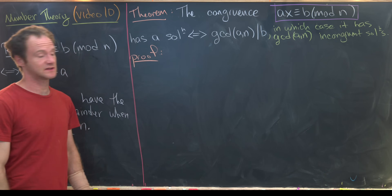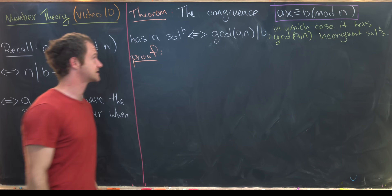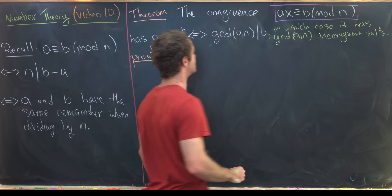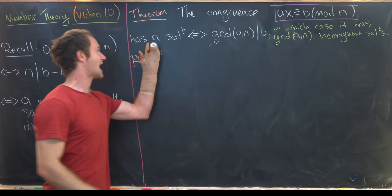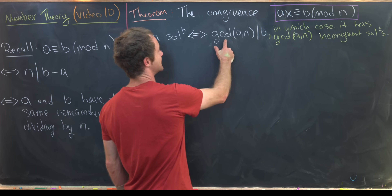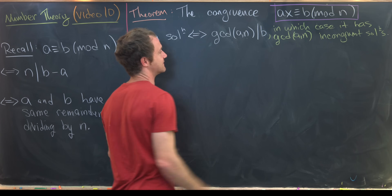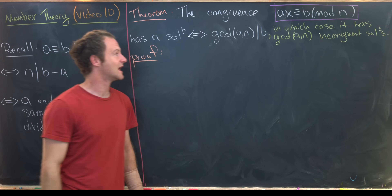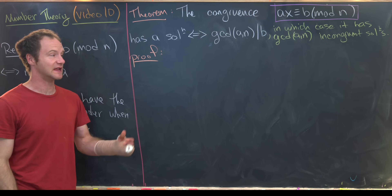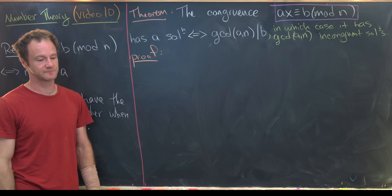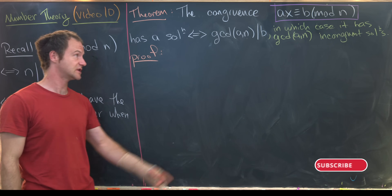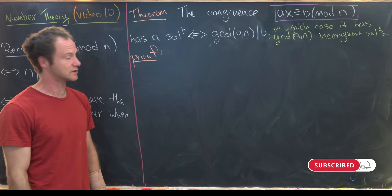The first theorem we want to prove: the congruence ax ≡ b mod n has a solution for x if and only if gcd(a, n) divides b. In this case, it has exactly gcd(a, n) incongruent solutions. So you could potentially have more than one solution if the GCD is not equal to one.